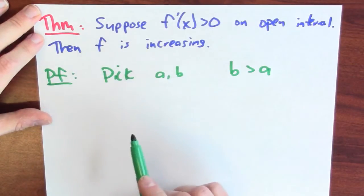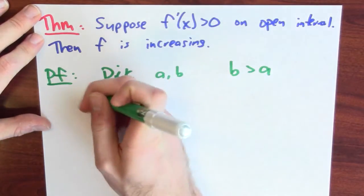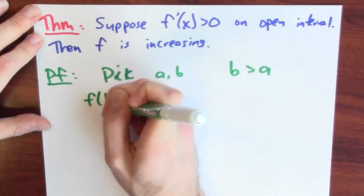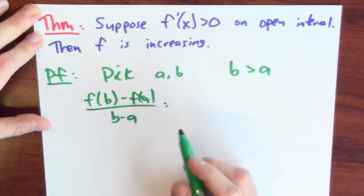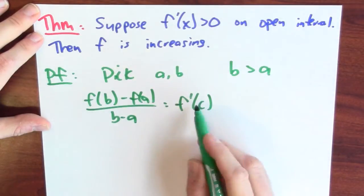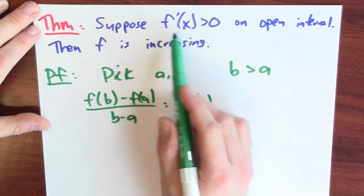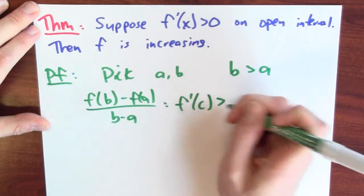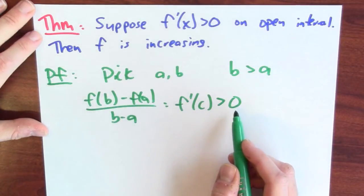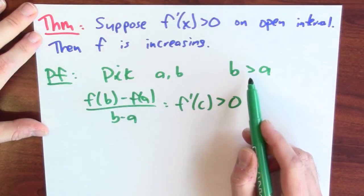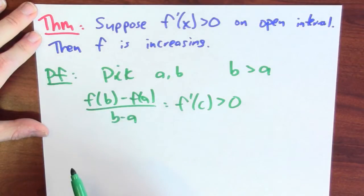F is continuous on the closed interval AB and differentiable on the open interval AB. The mean value theorem then tells me to look at [F(B) minus F(A)] over [B minus A], and the conclusion is that this equals the derivative of F at some mystery point in between A and B. The good news is I know the derivative is positive, so I know that [F(B) minus F(A)] over [B minus A] is positive. Since B is greater than A, the denominator B minus A is also positive.